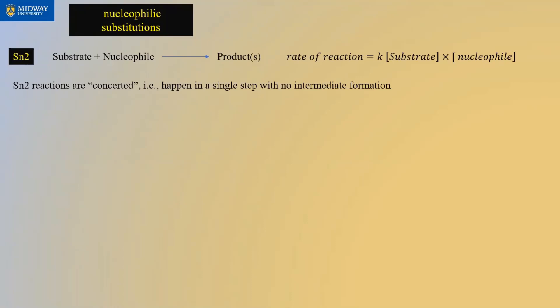SN2 reactions are considered single-step — they happen with no intermediate formation. As the nucleophile attacks the carbon bearing the leaving group, the leaving group is leaving at the same time. It's not that the leaving group leaves first and the nucleophile comes in second — it is simultaneous.